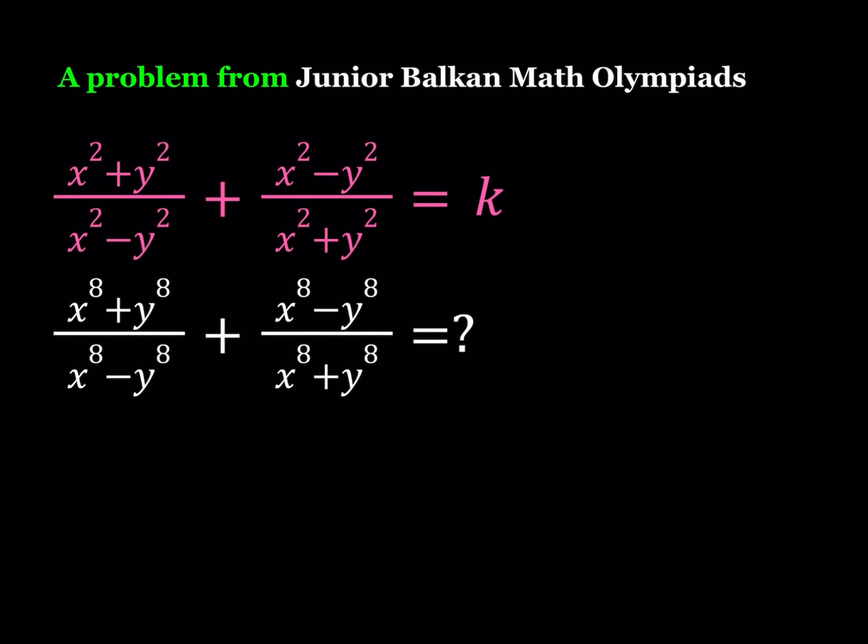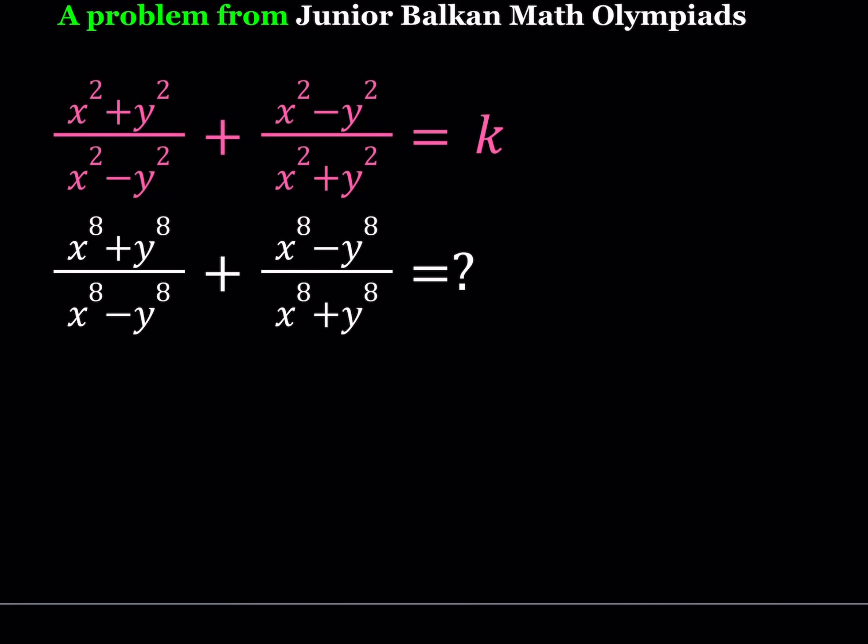We have a problem from the Junior Balkan Math Olympiads. We're given an expression that equals k, and we're supposed to find another expression in terms of k. We have x² + y² divided by x² - y², plus the reciprocal of that first expression — so the sum of something plus its reciprocal equals k — and we're supposed to evaluate the same expression for the eighth powers. This expression might look complicated, but don't worry, it's going to be simplified pretty easily. Let's get to it.